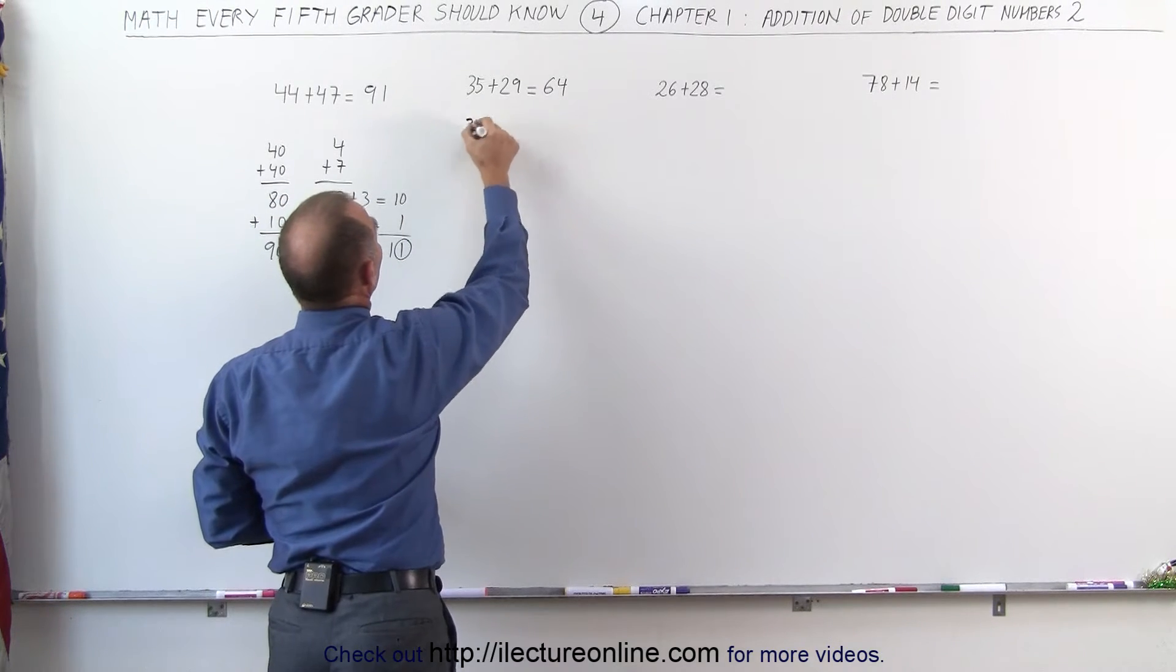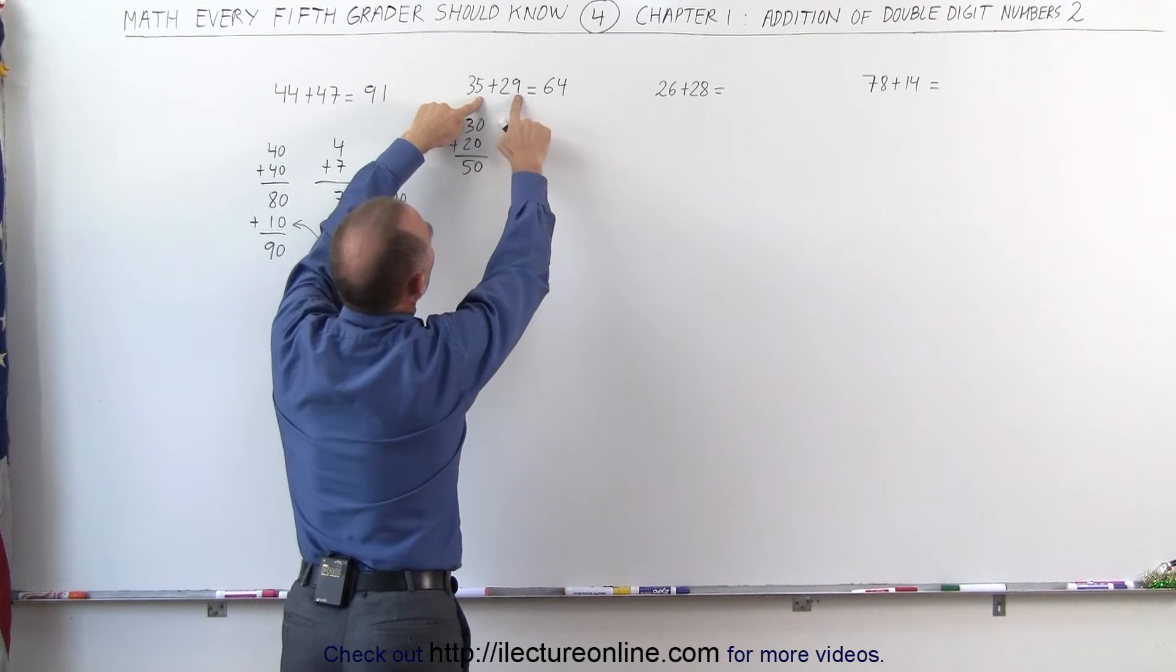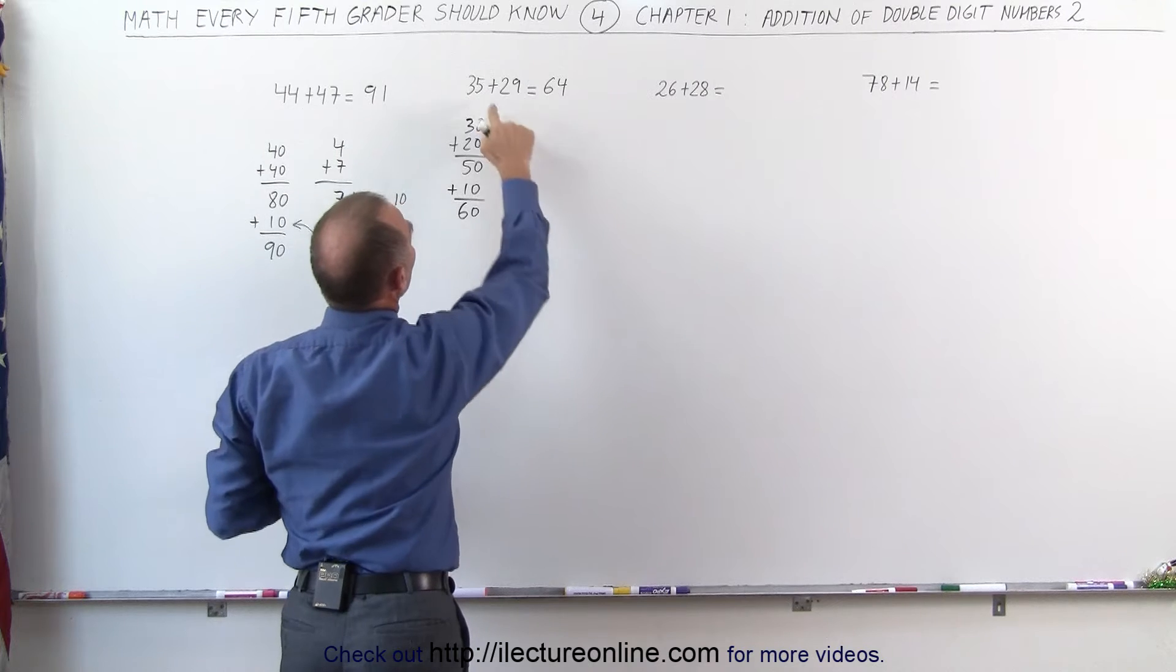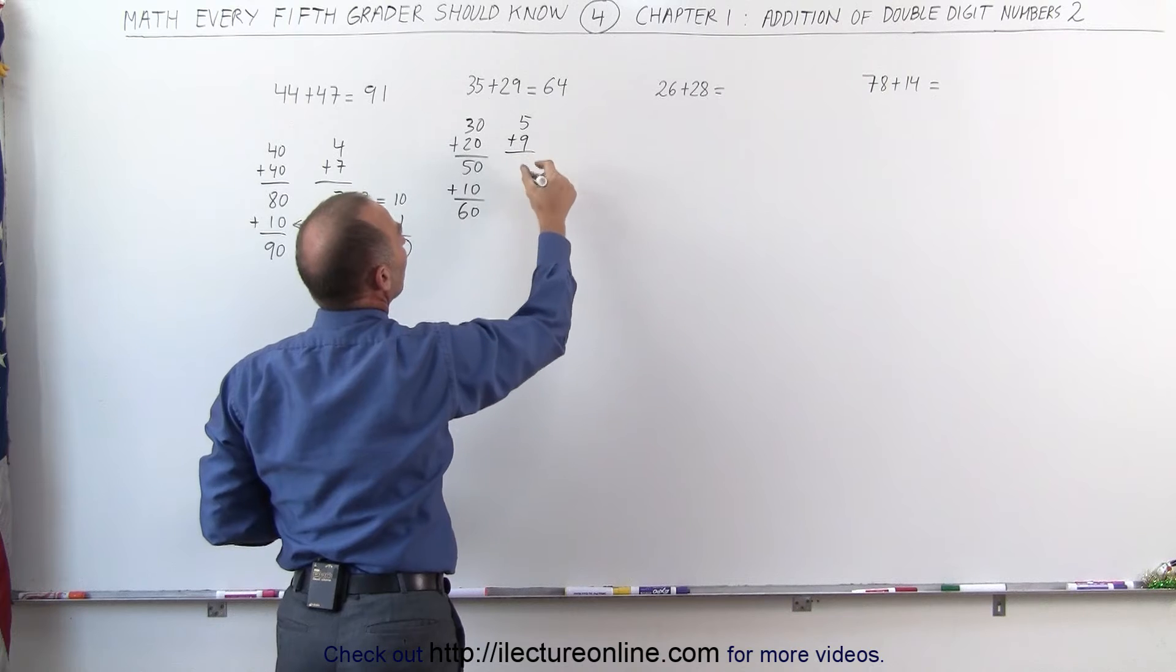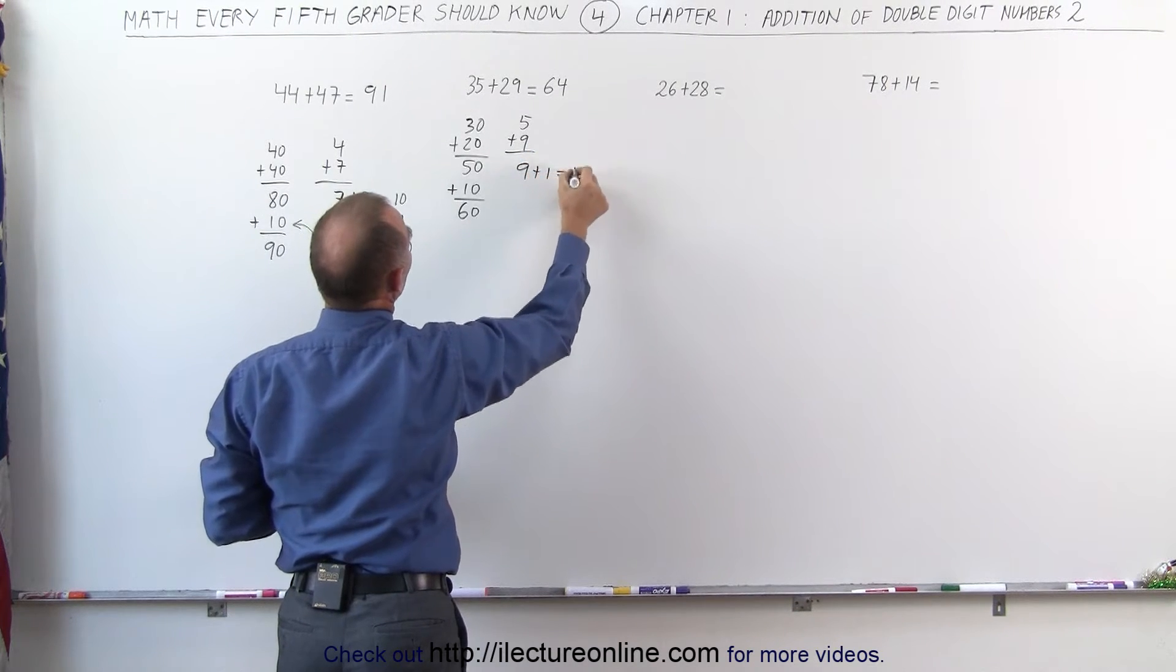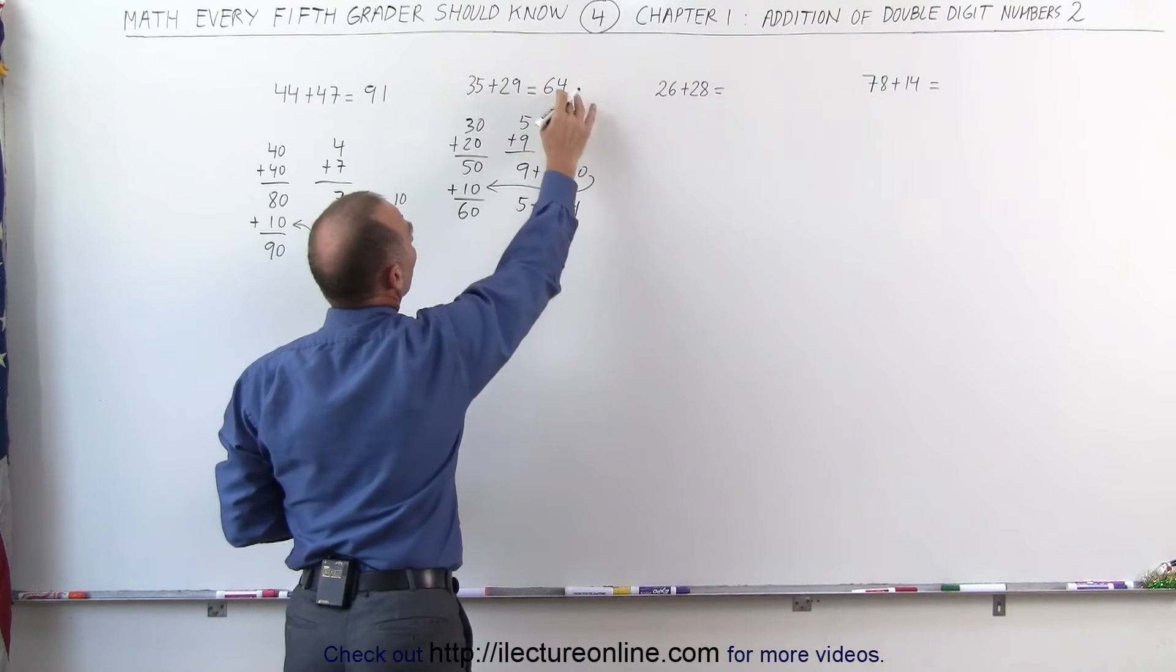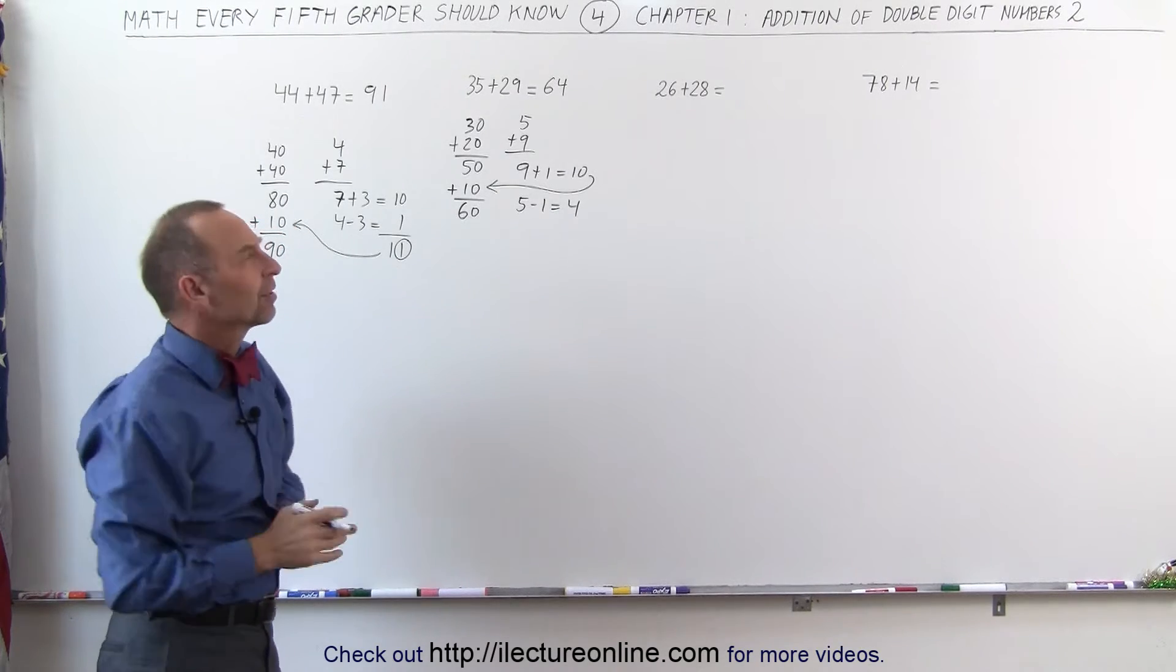We looked at 30 plus 20. That gives me 50, but I have to add 10 more because I know that these two together will add up to more than 10. So I add another 10 to that to give me 60. Now I add 5 plus 9. I needed one more to the 9 to make that a 10. So 9 plus 1 equals 10, which is the 10 that went here. I subtracted the 1 from the 5. 5 minus 1 is equal to 4. Add that to the 60, that gives me 64.